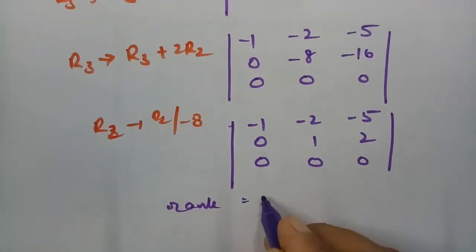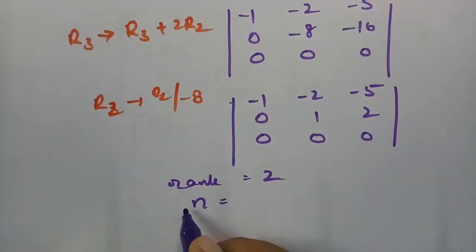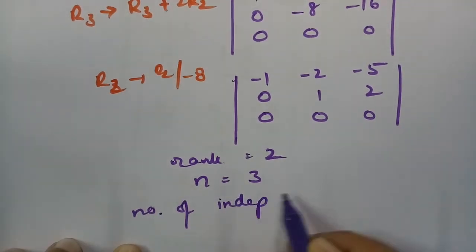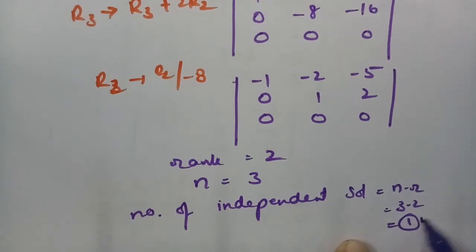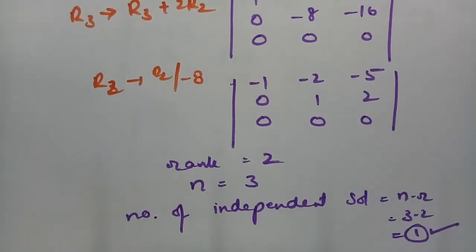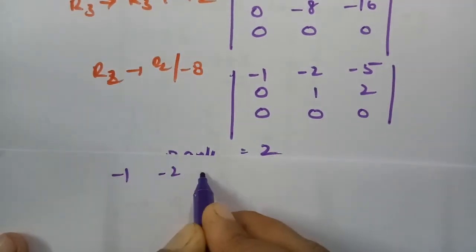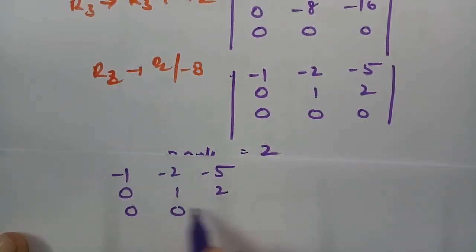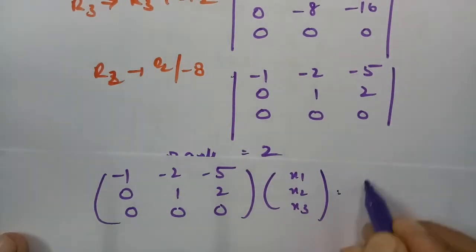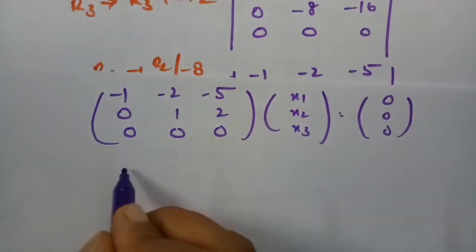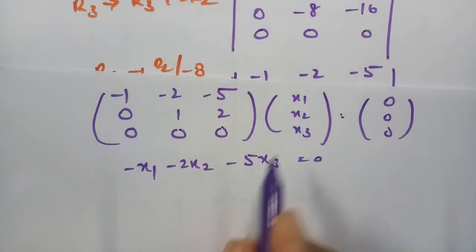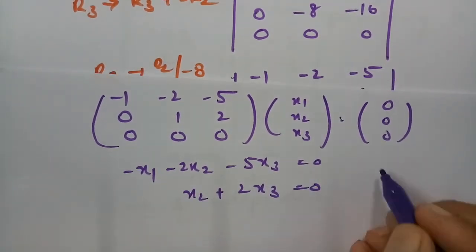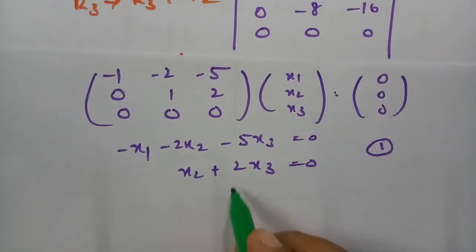The rank is 2. With n = 3 unknowns, the number of independent solutions is n − r = 3 − 2 = 1. The two equations are: −x1 − 2x2 − 5x3 = 0 and x2 + 2x3 = 0. Choosing x3 = k, we get x2 = −2k.